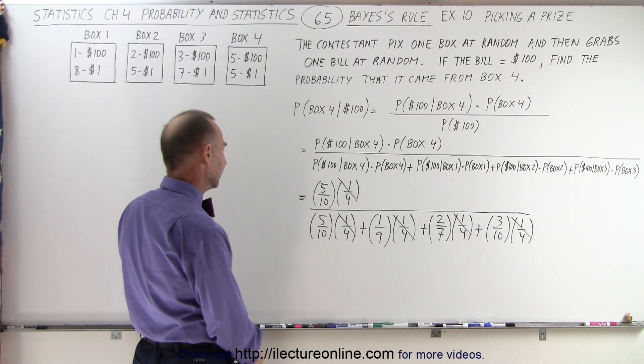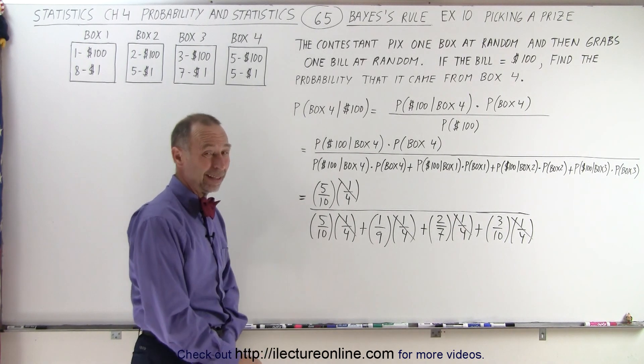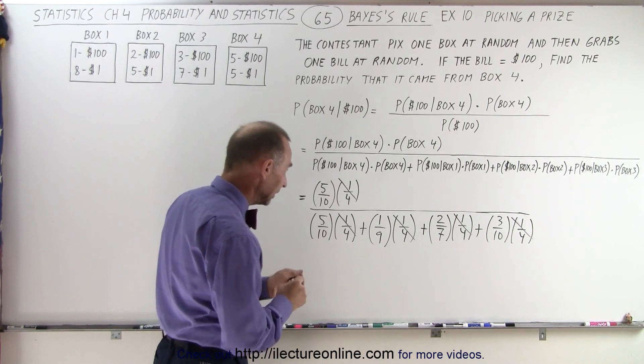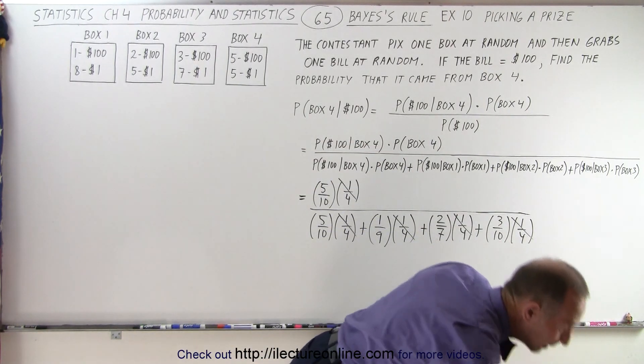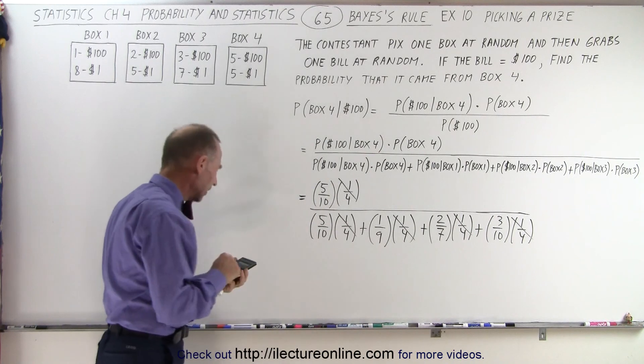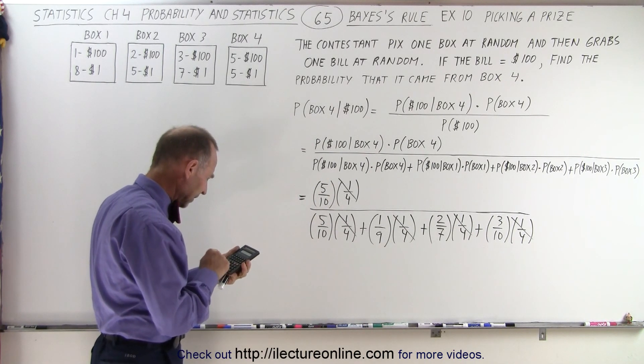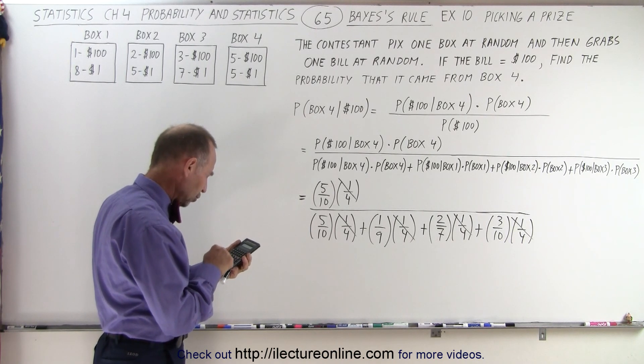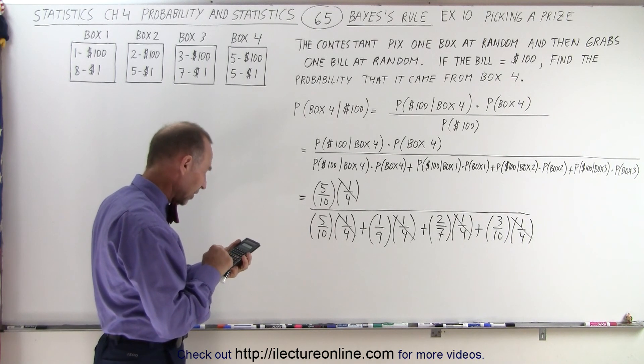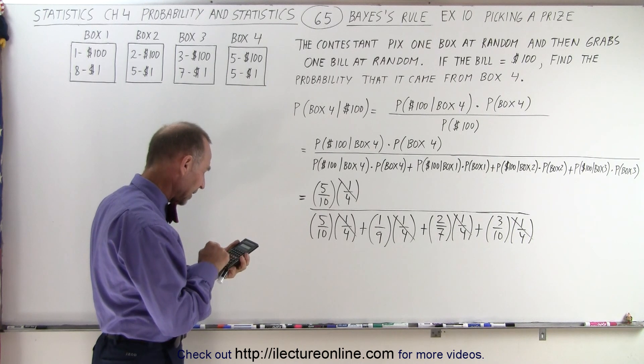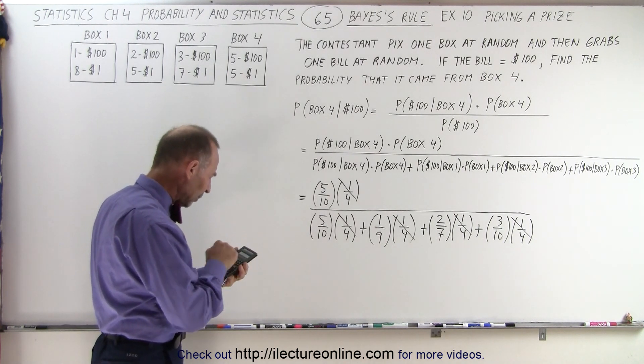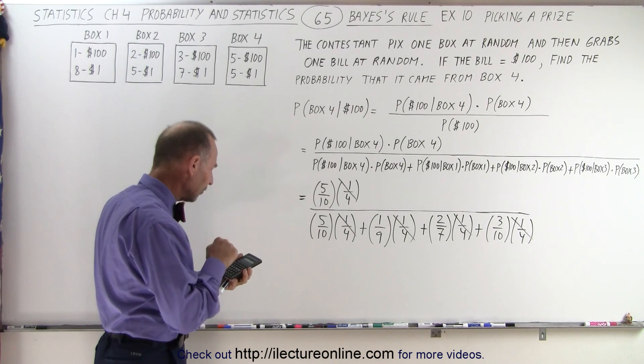Common denominator. Well, at this point, I think I'm just going to grab a calculator, because a common denominator would be quite complicated. So let's just grab a calculator and calculate the denominator. So we have five divided by ten, plus one divided by nine, plus two divided by seven, plus three divided by ten, equals, and that's the denominator.